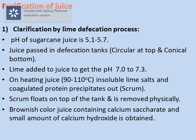Purification of juice is done in three stages: first is clarification, second is sulfitation, and third is carbonation. First we will see clarification of cane juice by the lime defecation process. The pH of sugarcane juice is 5.1 to 5.7. This juice is passed into defecation tanks, which are circular at the top and conical at the bottom. To the juice we add lime, and the pH of the juice is increased to 7.0 to 7.3.